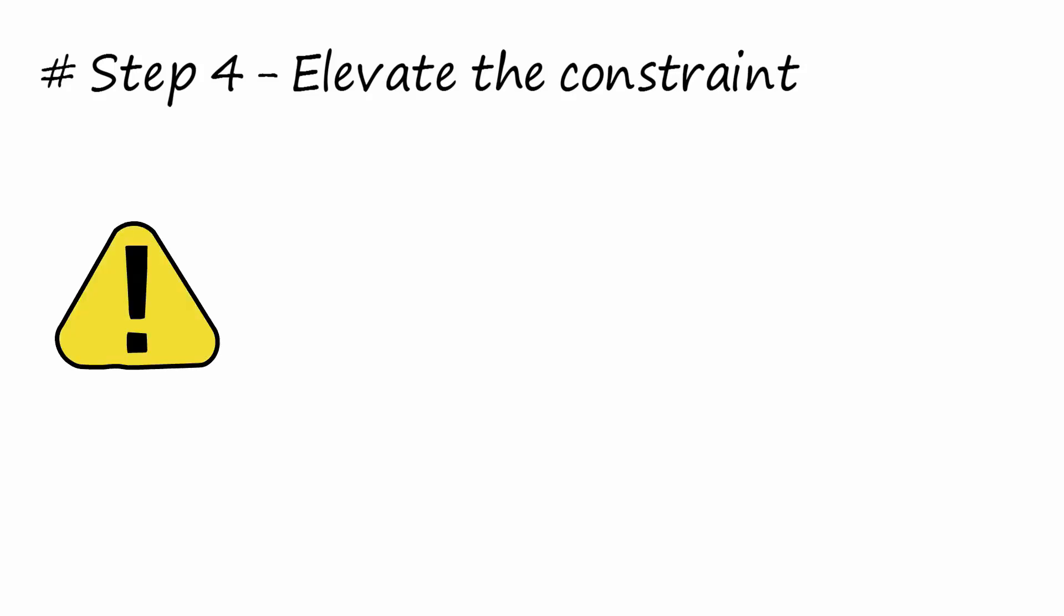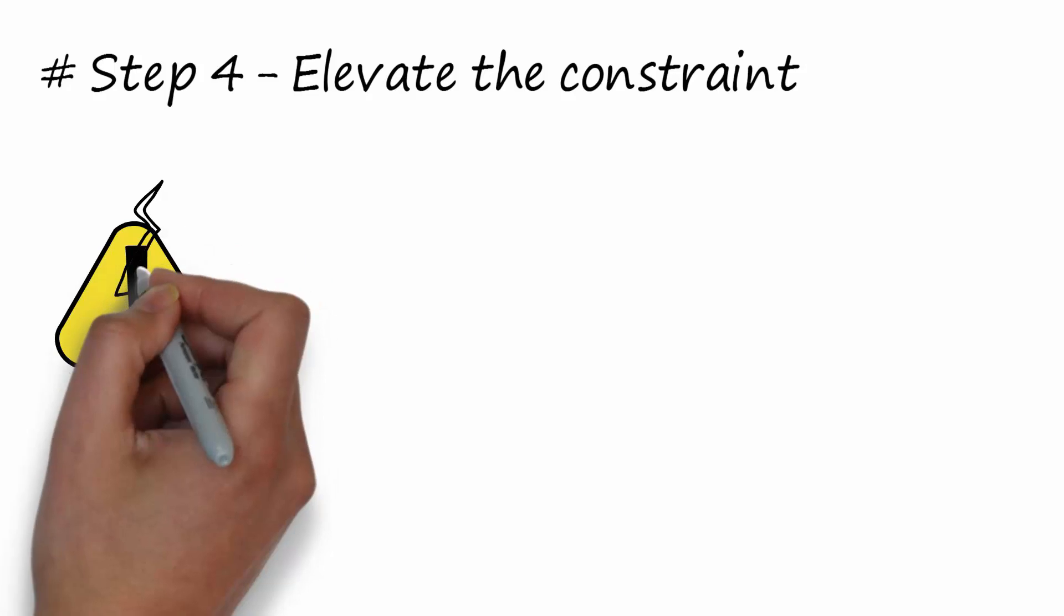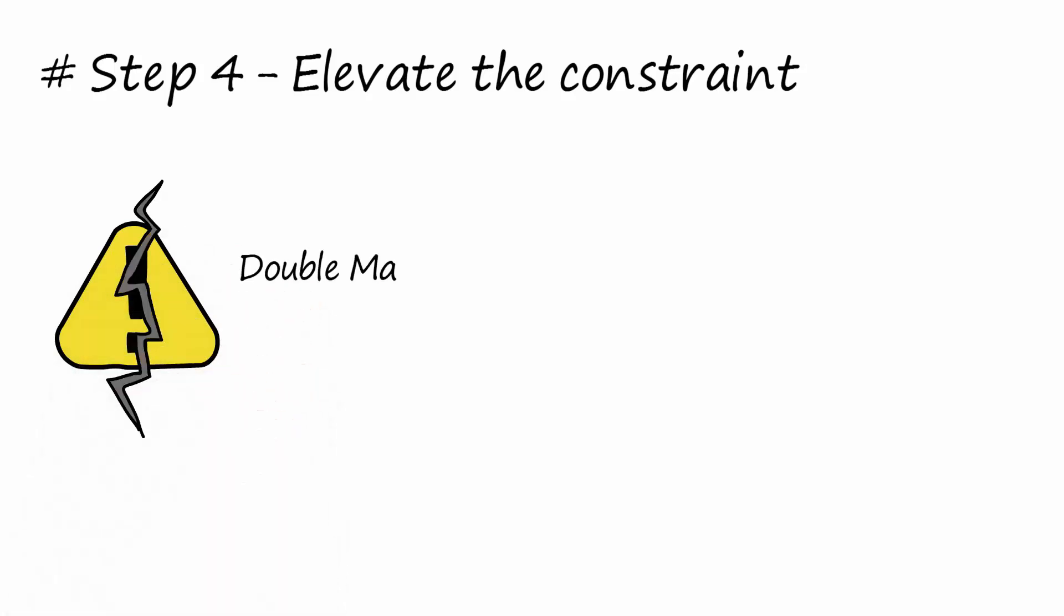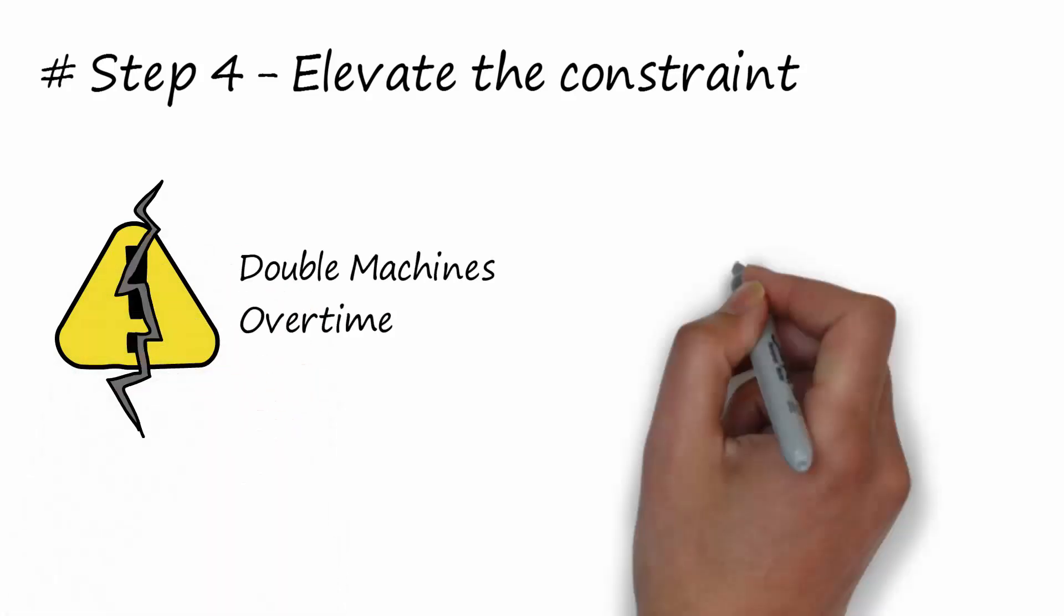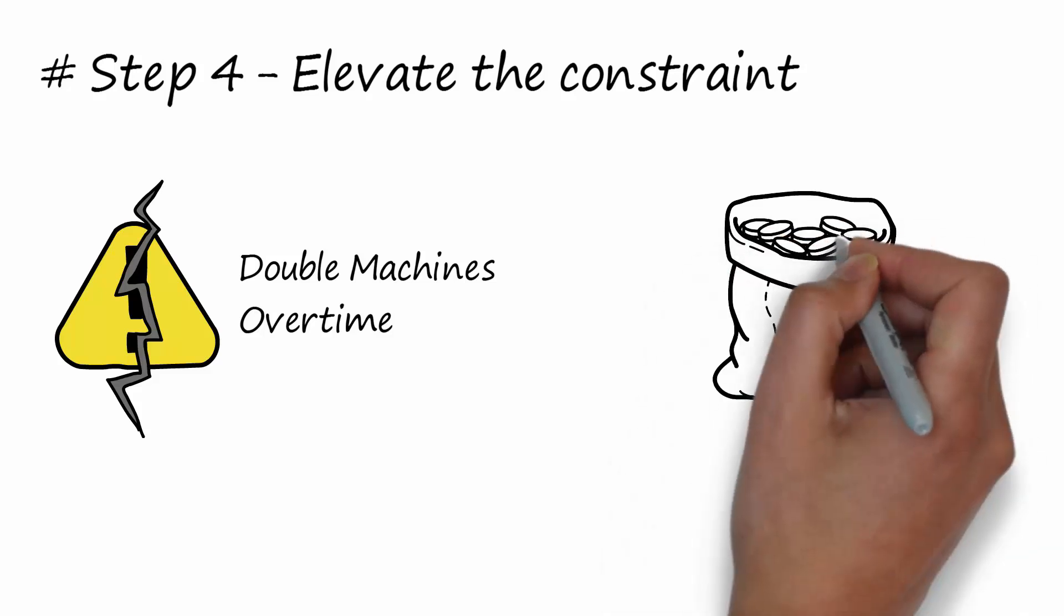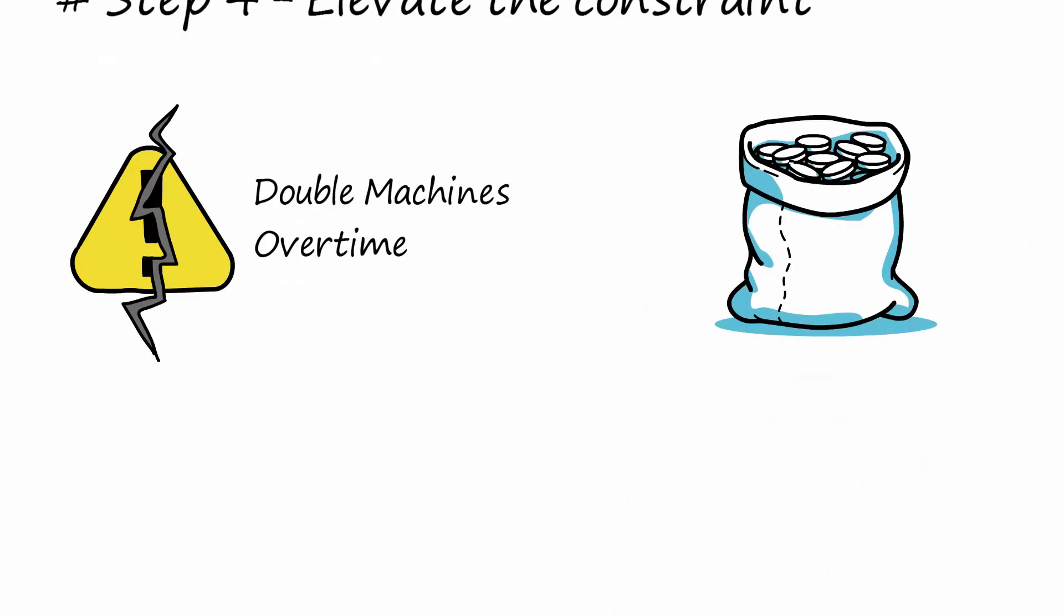Step 4: Elevate the constraint. After completing points 2 and 3, the constraint must be broken with more decisive actions such as the doubling of the machines or overtime. If the identified constraint is a true constraint, these expenses will be abundantly repaid.